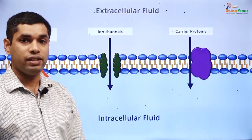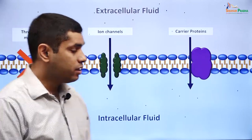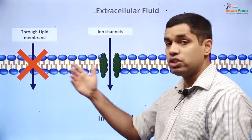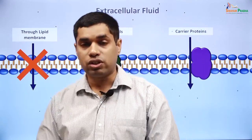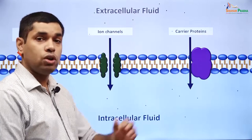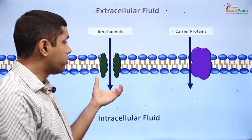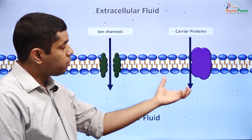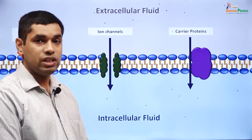So for a substance which cannot dissolve through the lipid membrane, the way it crosses the membrane is either through ion channels or through carrier proteins. We will discuss more about ion channels now, but we will also discuss carrier proteins in a little more detail.